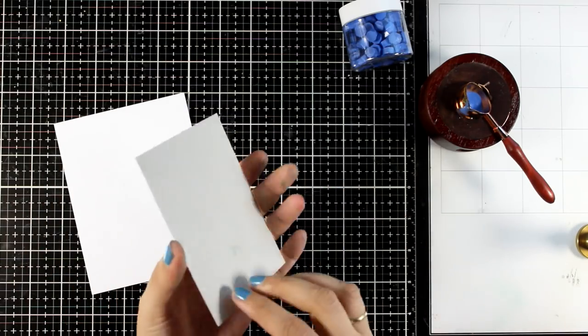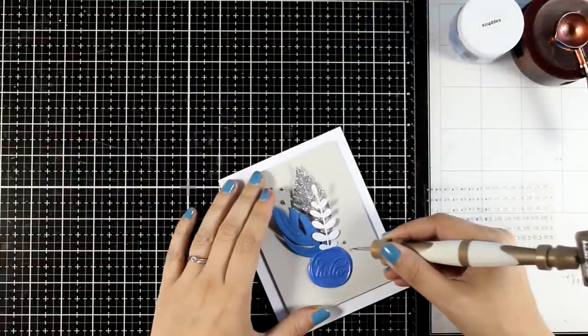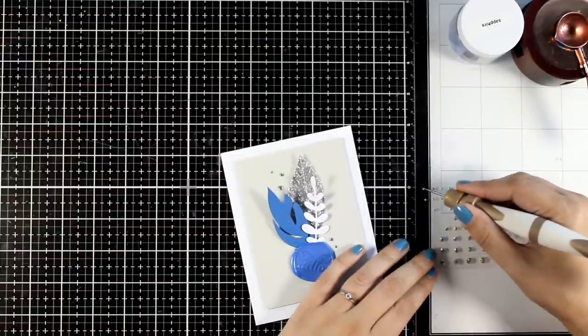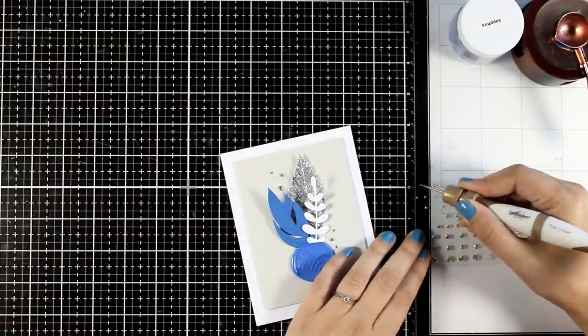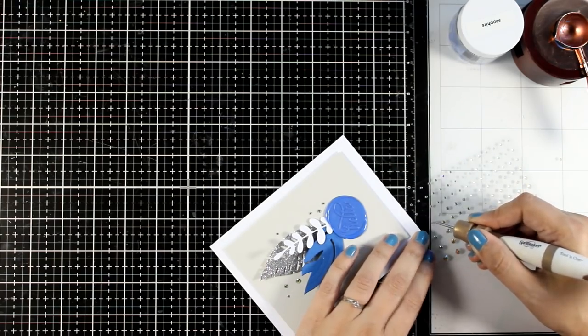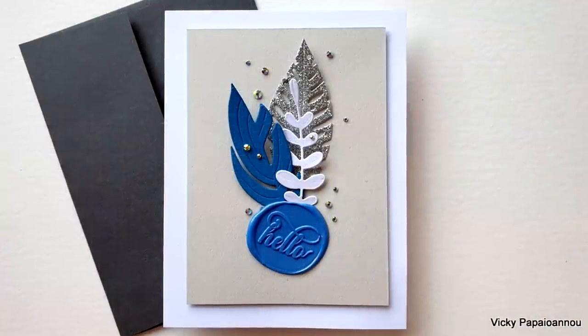I'm just going to stick this on top of a standard card that's four and a quarter by five and a half using some foam tape in the back. And I'm going to finish it off by adding some silver gems. In this design I could have embossed the grey panel for my card just to add something extra on the background. However I like the simplicity of this card but here is an option for you in case you want to case it.